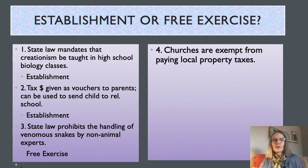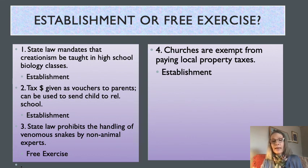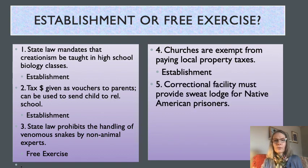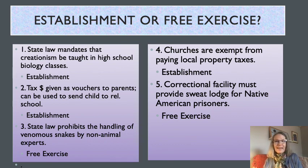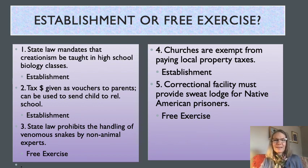Churches being exempt from paying local property taxes is an Establishment Clause case — the state is giving a benefit to all religious institutions who don't want to pay property taxes, which is essentially a support of religious institutions. Number five — correctional facilities must provide sweat lodges for Native American prisoners — deals with the Free Exercise Clause, because one of their religious practices is to pray and meditate within a sweat lodge. The state must provide that ability for people to exercise their religious beliefs.